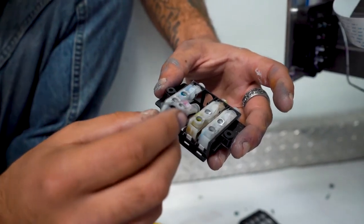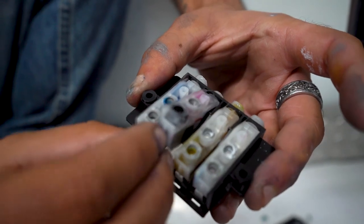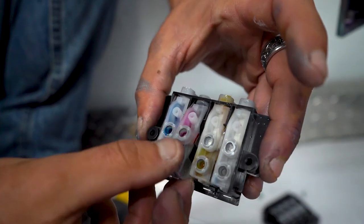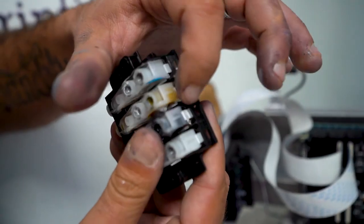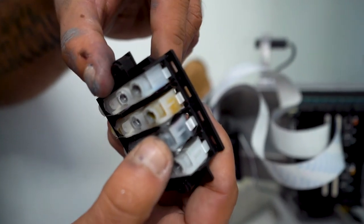Take your new damper and seat it into the housing. Push down so that this clip locks into place.